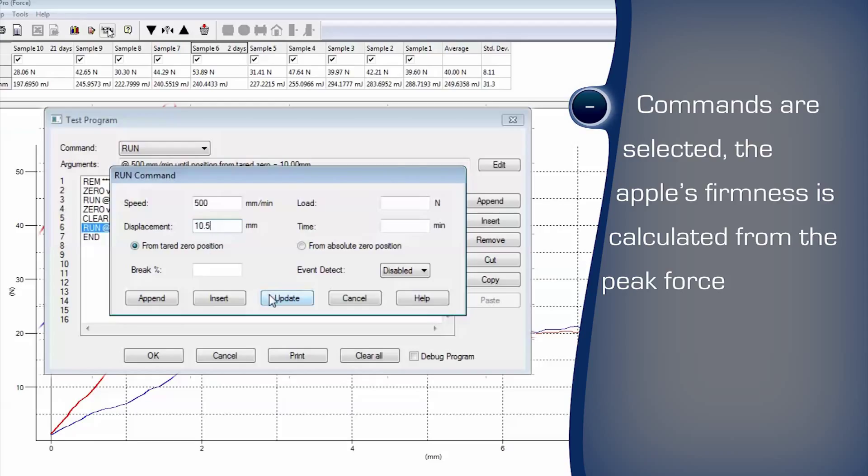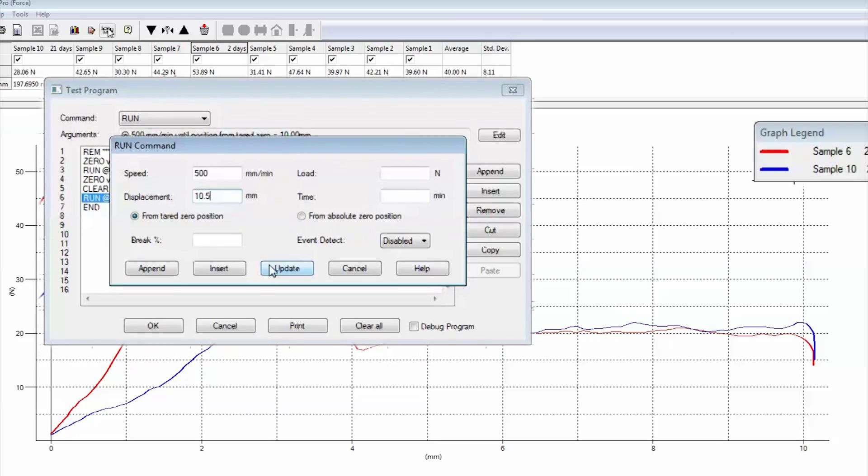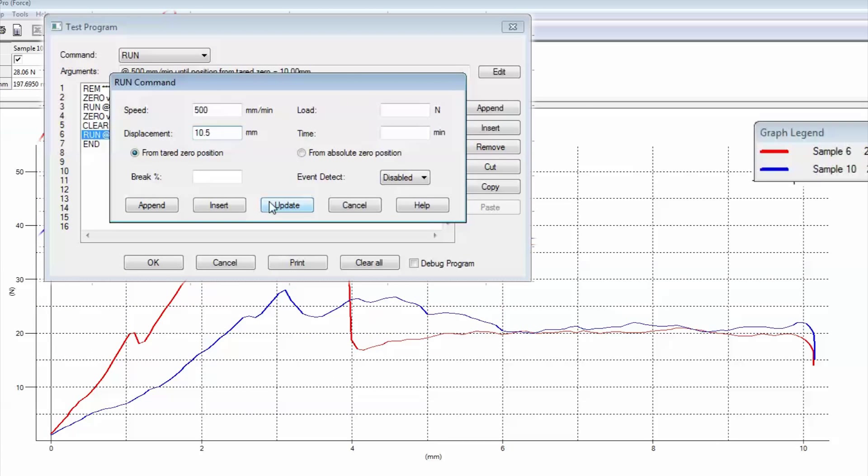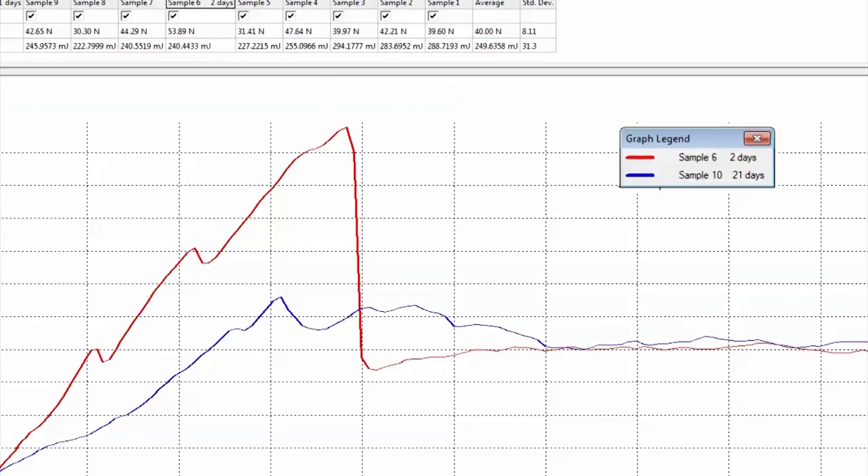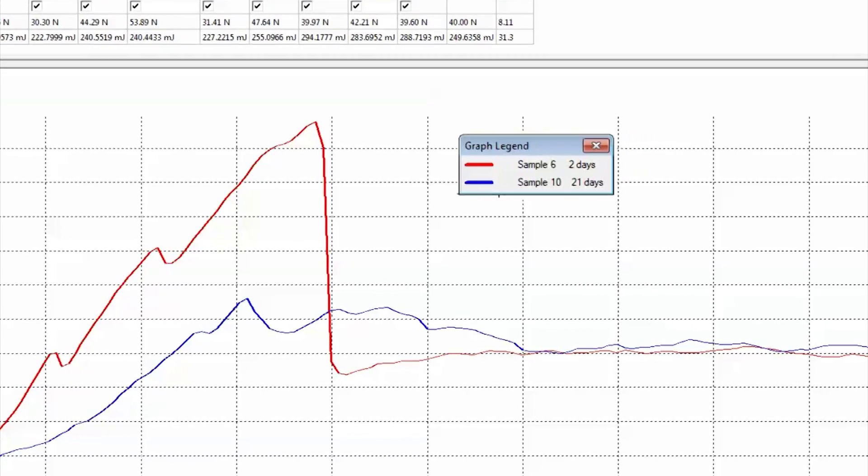And the work required to complete the penetration into the fruit for 10mm is also calculated from the area below the force distance curve. These two values will give greater information about the texture to more closely compare to samples and provide even more feedback relevant to the quality of the produce.